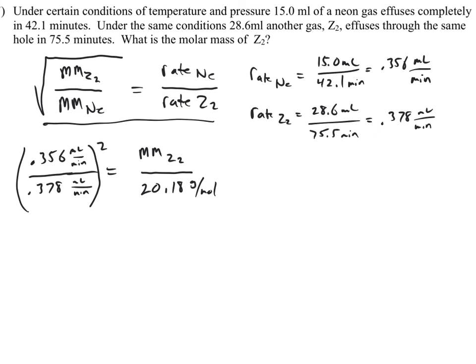Okay. As I already said, milliliters per minute will cancel. So when we solve this, the molar mass of Z2 is equal to 17.9 grams per mole.